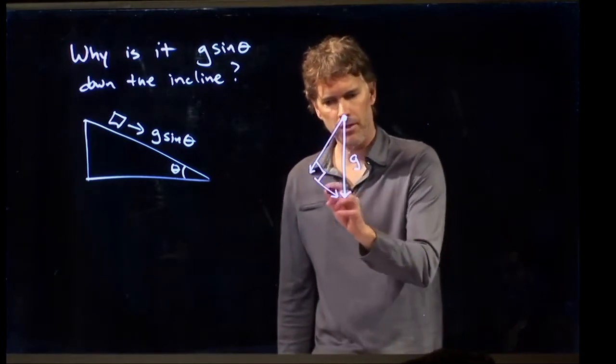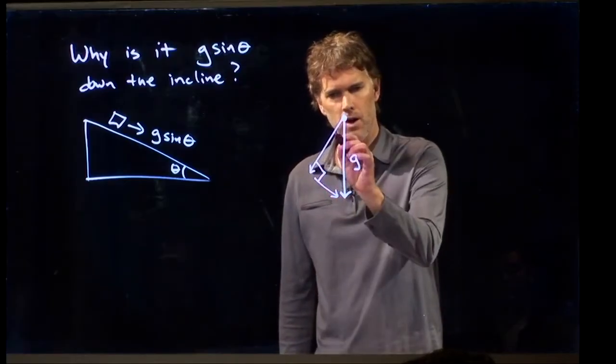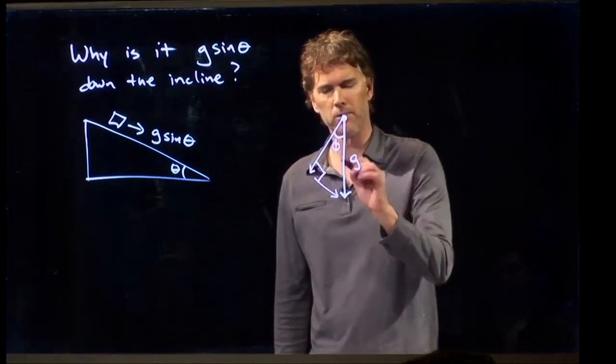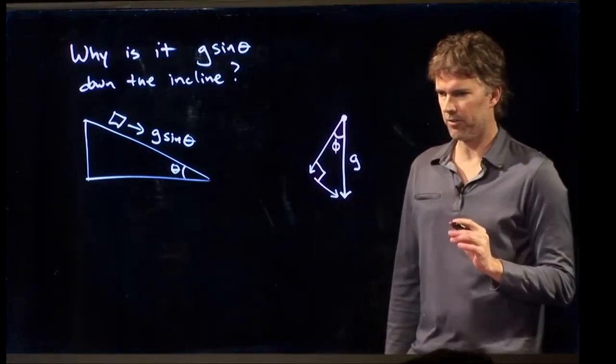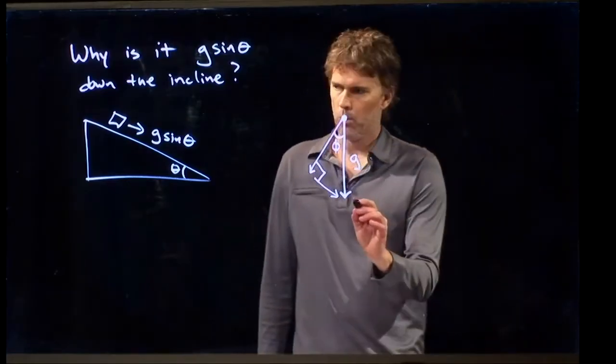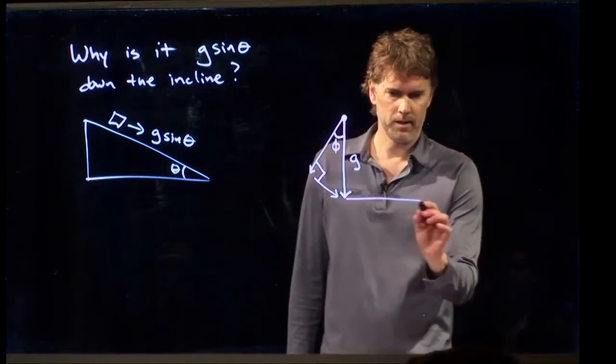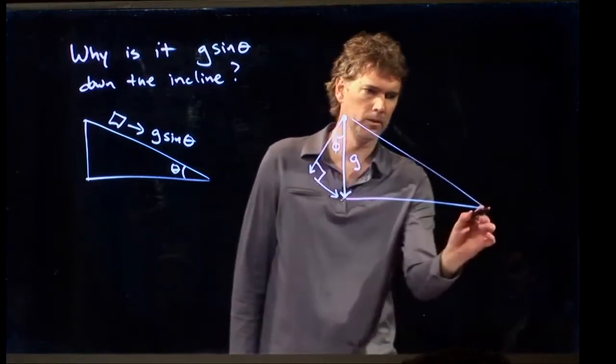And now if I want this side of the triangle, all I need to know is that angle right there. We don't know exactly what that angle is yet, but let's just call it phi. What does the rest of my triangle look like? Here's what the rest of the triangle looks like.